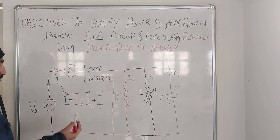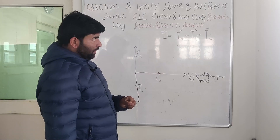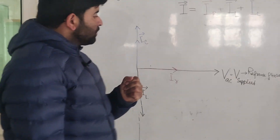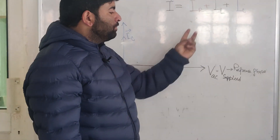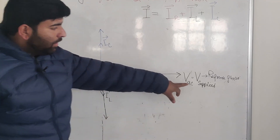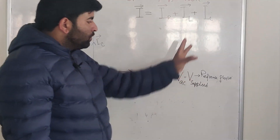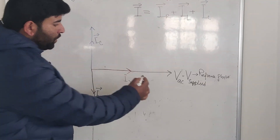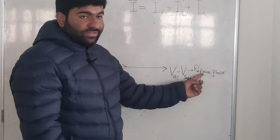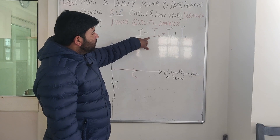We will keep our resistive load constant and vary L and C. The vector sum of total current will be IR plus IL plus IC. Since all three loads are connected in parallel, the supply voltage is impressed across all three loads. We take this voltage as the reference phasor, represented by the black phasor VAC.